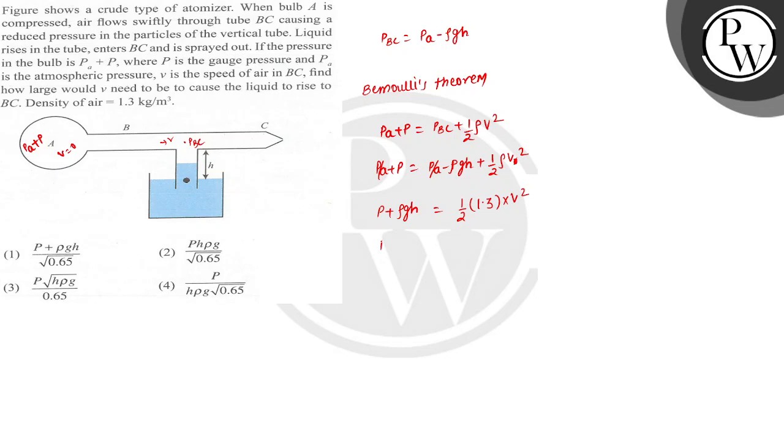So from here I'll get P plus rho GH divided by 0.65 equal to V square. So the value of V will be P plus rho GH divided by 0.65. This is V square.